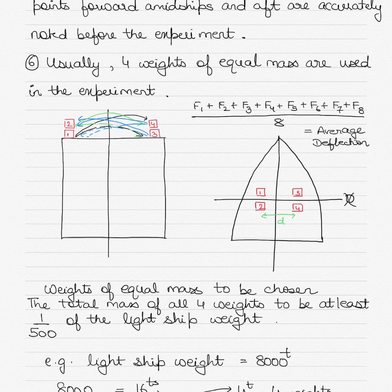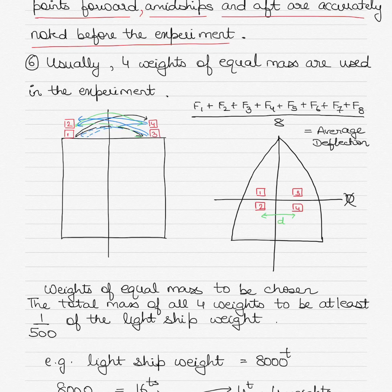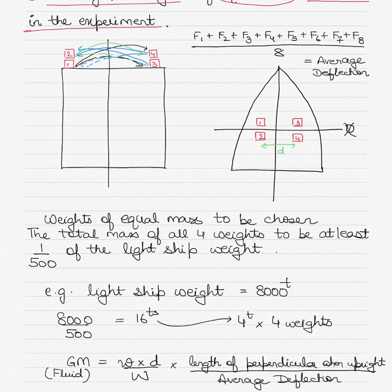If the heel produced is large, KM transverse will change and the heel will not be proportional to the heeling moment applied. For larger ships, the lower limit of heel can be as low as 1 degree. The deflection of the pendulum bob should not be less than 15 cm. The drafts at points forward, amidships, and aft are accurately noted before the experiment.